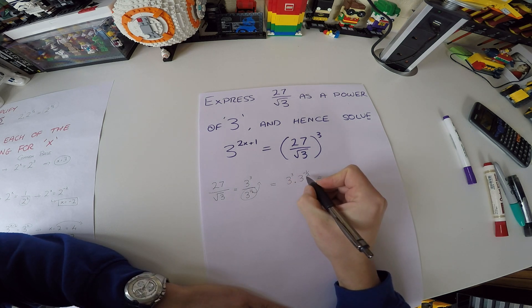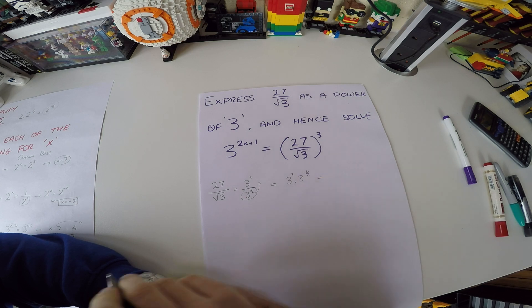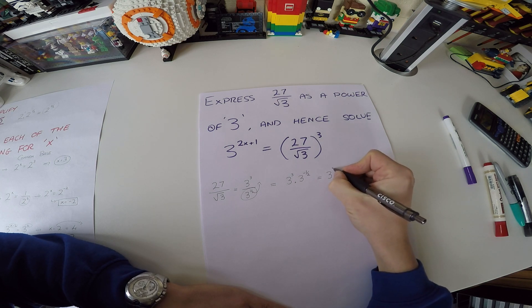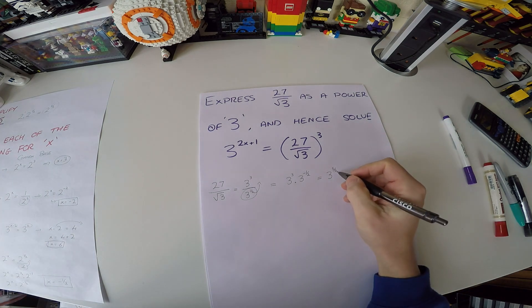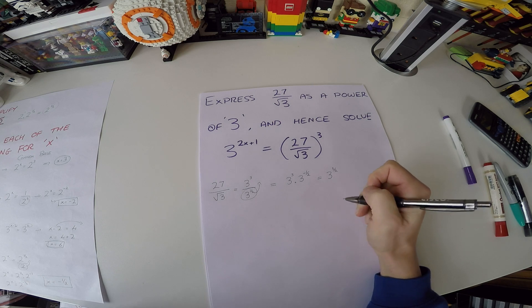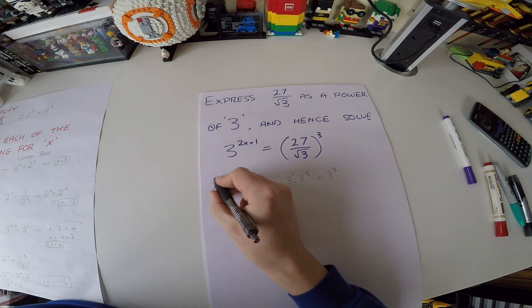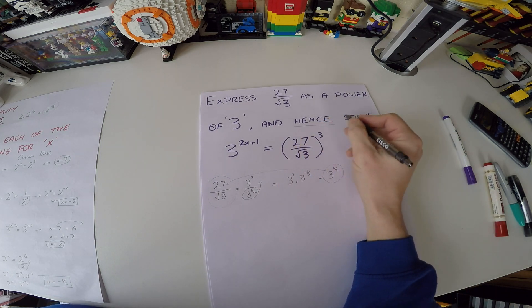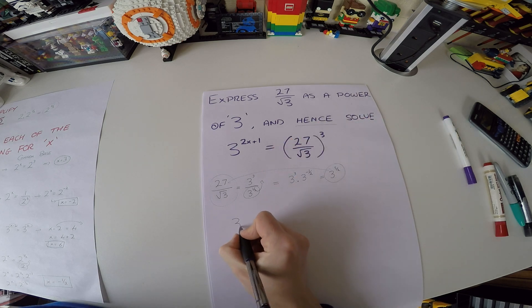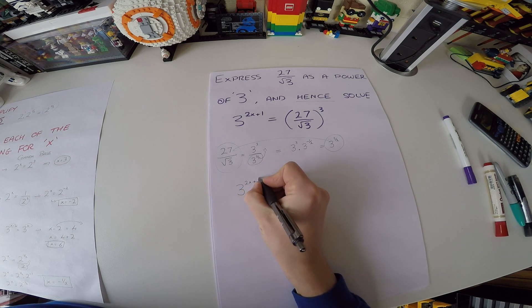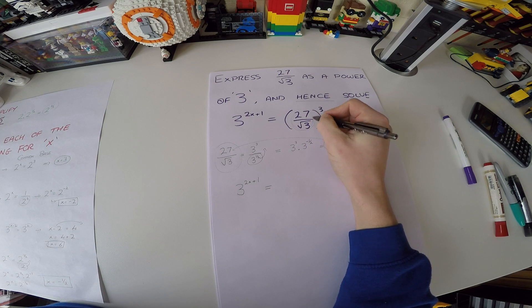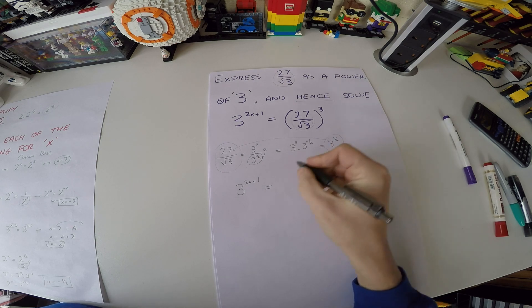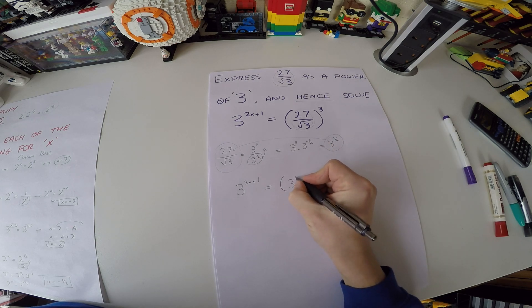In the multiplication rule we add the two powers: 3 minus a half gives 2 and a half, which is 5 over 2 as a rational number. So 27 over root 3 equals 3 to the power of 5 over 2. Now for the equation: 3 to the power of (2x + 1) equals (27 over root 3) to the power of 3. We substitute our result — the stuff in brackets becomes 3 to the power of 5 over 2 — all to the power of 3.